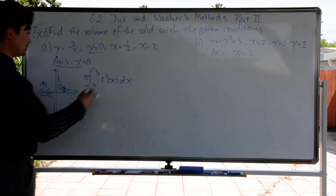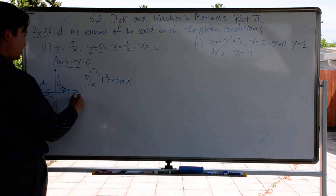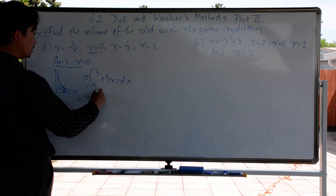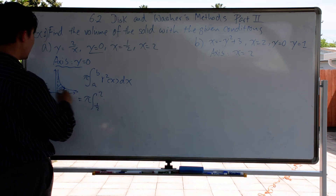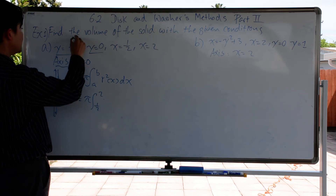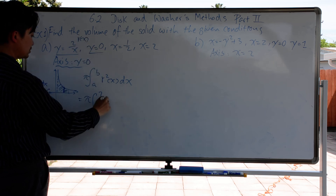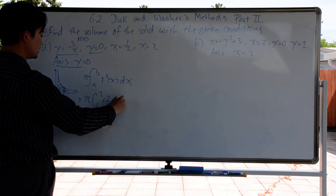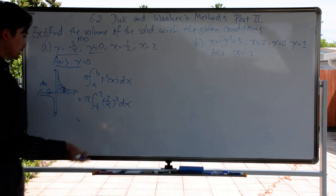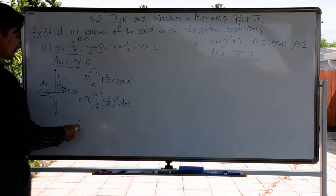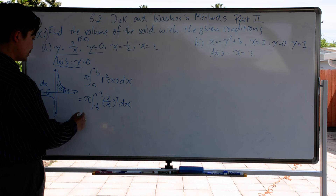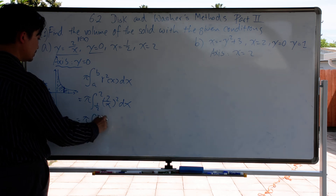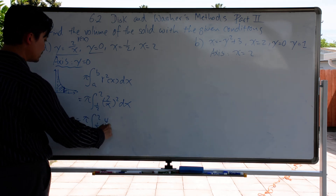That's something we talked about previously. Pi, with the boundary from A to B — we have 1/2 all the way to 2. Then r squared, which is the function itself, which is 2 over x, quantity squared, times dx. The rest is just integrating it. So we get pi, integral from 1/2 to 2 of 4 over x squared, dx.